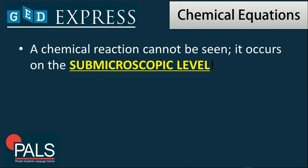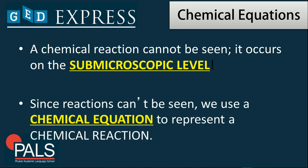A chemical equation, like what was discussed before in my previous videos, is a symbolic representation that can explain or summarize a chemical reaction. Since a chemical reaction cannot be seen and it occurs on a submicroscopic level, we can make use of chemical equations to represent them.